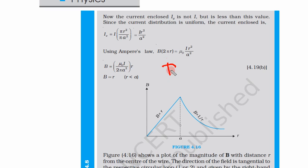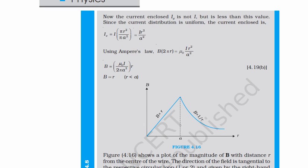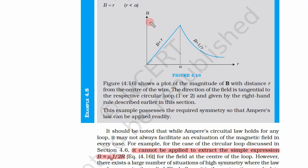We have two conditions: B is proportional to r when we are inside the wire, and B is proportional to 1/r when we are outside. So we have these two conditions. Let us make the graph for these two conditions together. In this graph, this axis is the magnetic field B and this is the distance r, and this 'a' is the radius of the wire.